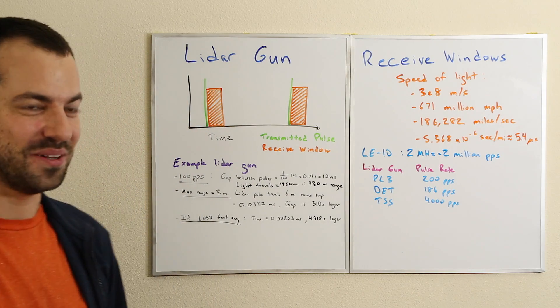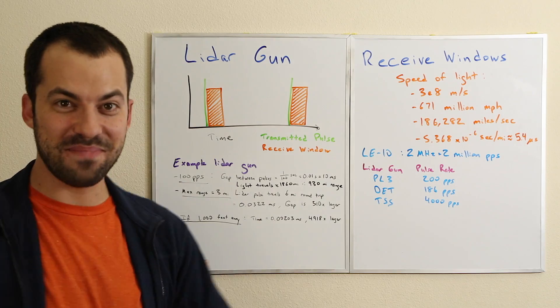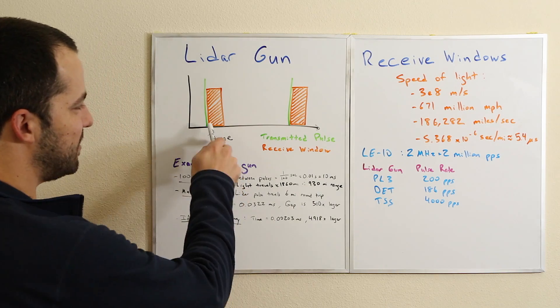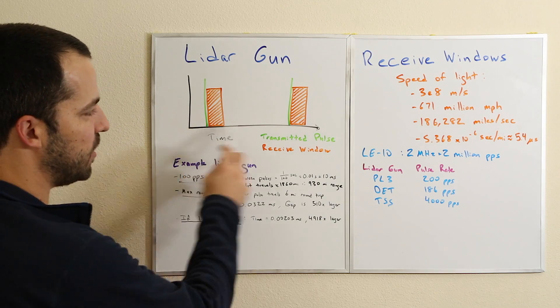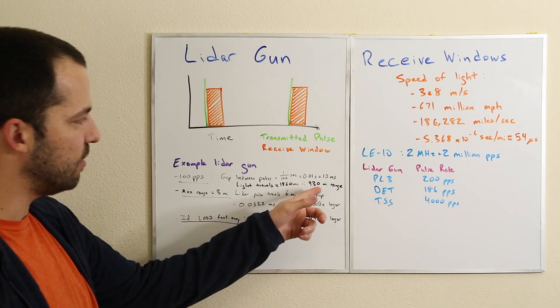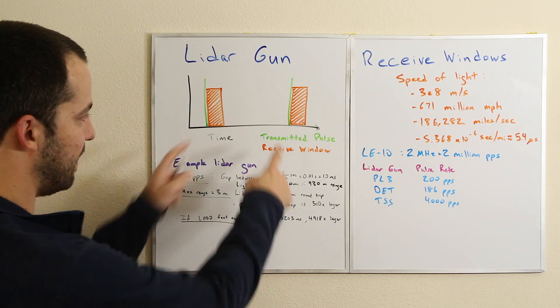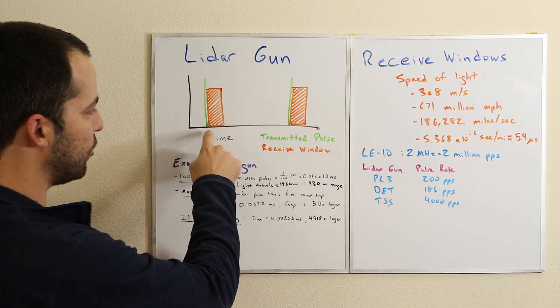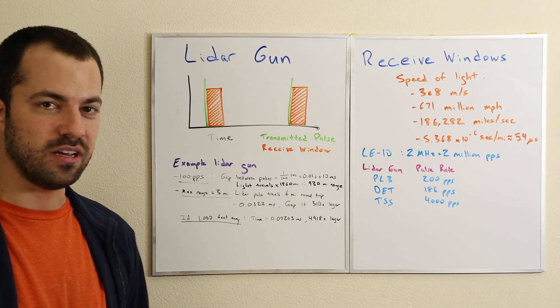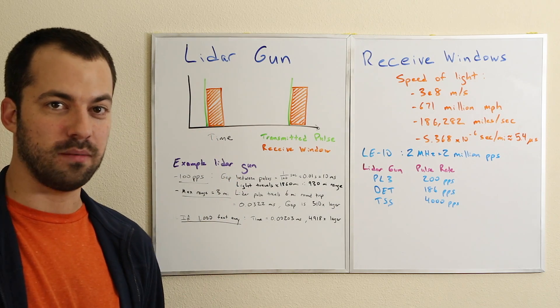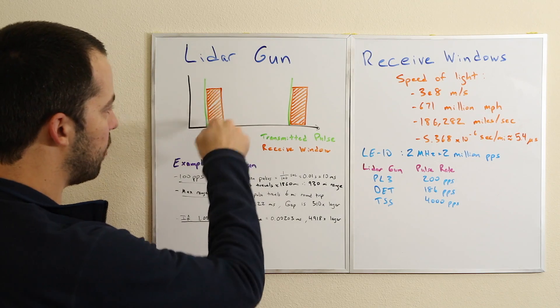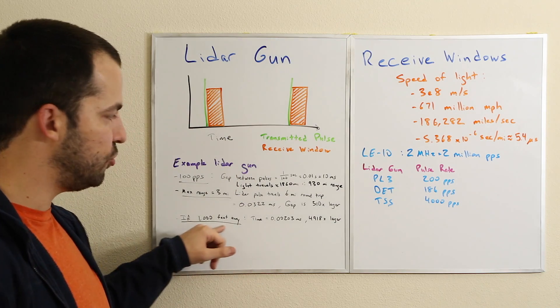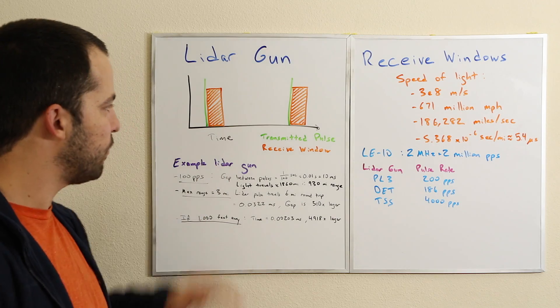A subject 1,000 feet away gives us a 2,000 foot range. It's going to travel 930 miles or so, which means this gap is almost 5,000 times larger than the window of opportunity when the actual pulse is going to be coming back. Our receive window is going to be much, much tinier when we're looking at more legitimate distances.